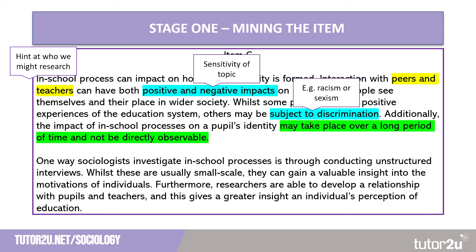Then we have what I'd see as a methodological issue: the impact of in-school processes may take place over a long period of time and may not be directly observable. If we're doing an interview, is this a positive or a negative thing? If we were doing an observation it may be very different. We've coloured this one in green to link to an issue with the method, but you can also say this shows a problem with measuring identity formation — how do we measure it?